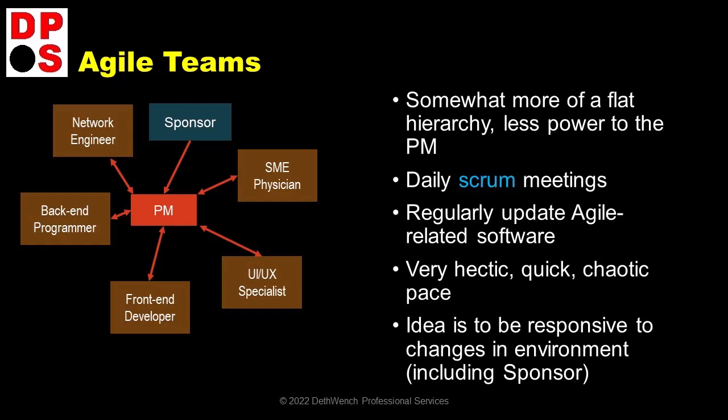Agile teams usually start the day with a meeting called the Scrum meeting. These meetings do not have agendas. Instead, the PM and other team members tend to keep track of action items and other tasks using software that supports the agile methodology. What I've seen is that they generally spend the Scrum meeting going over entries in these software applications and planning what everyone is going to do that day. Scrum meetings remind me of those cooking shows where the kitchen team meets at the beginning and gets ready to cook a meal for a hundred people at a wedding. They tend to be hectic and quick and run at a chaotic pace. In fact, the whole day seems to run that way under Agile.